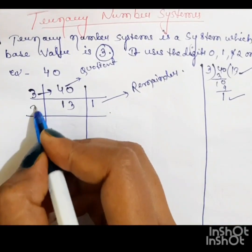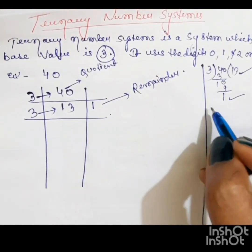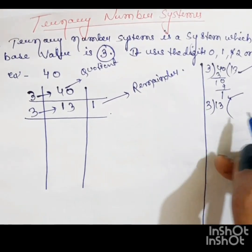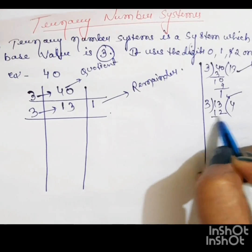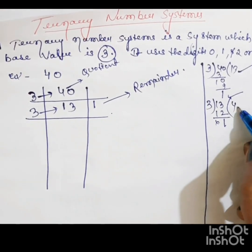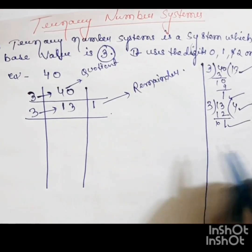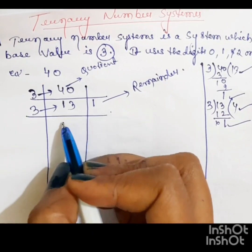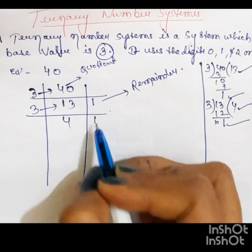Again, 3 divided 13. Here 4 is quotient. 1 is remainder. Put there. 4 is quotient. 1 is remainder.